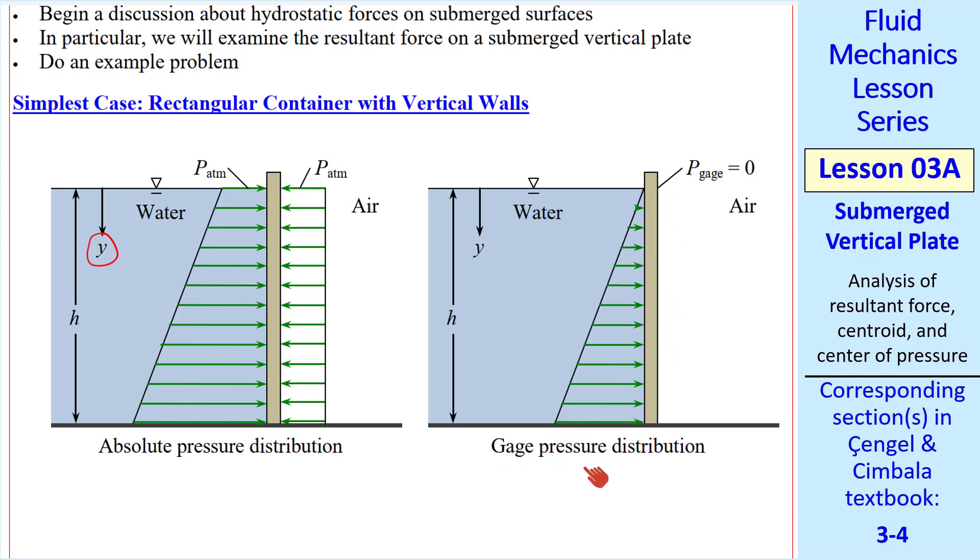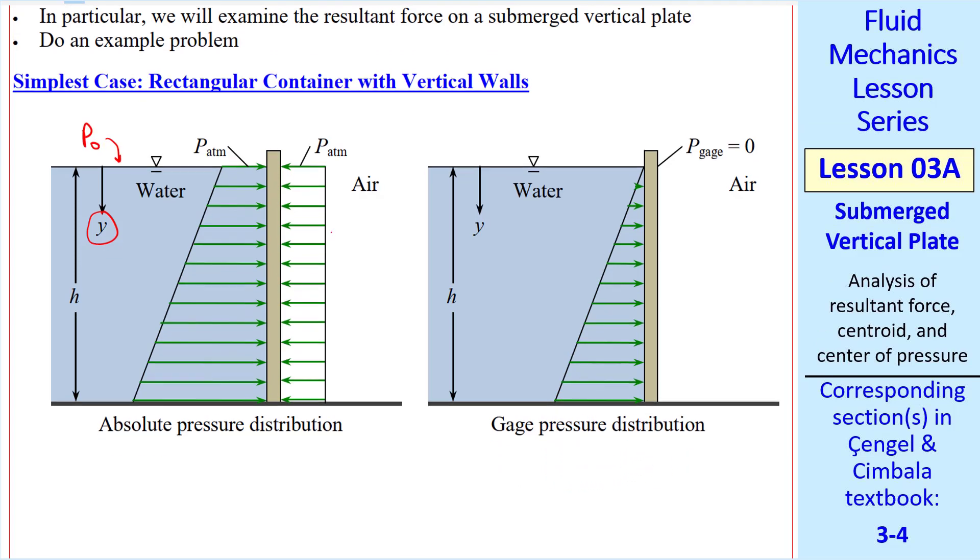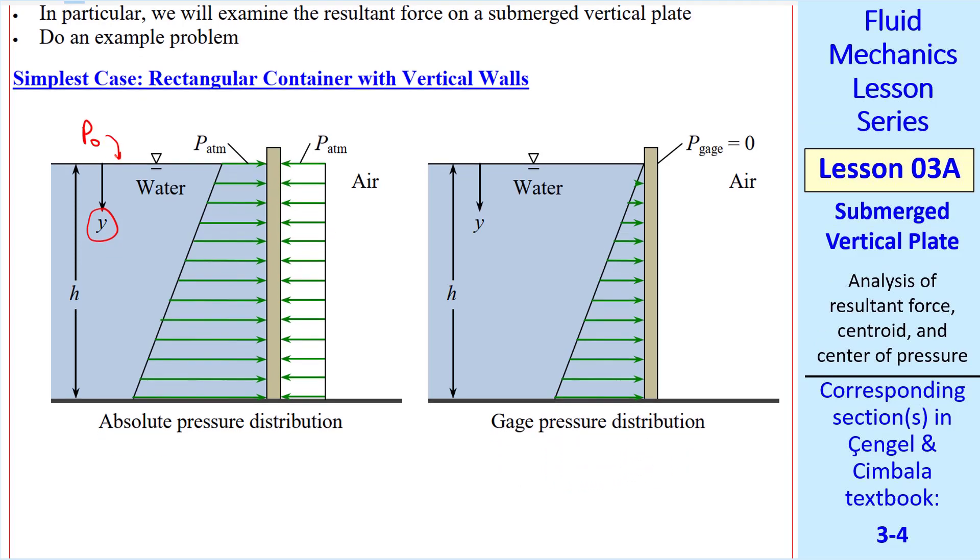It's much easier to work with gauge pressure in these types of problems. The notation in the textbook is that P0 is the pressure at the surface of the water. In terms of absolute pressure, P0 is P atmospheric. In terms of gauge pressure, P0 is zero here. This turns out to be a great simplification later on.